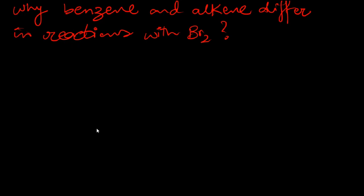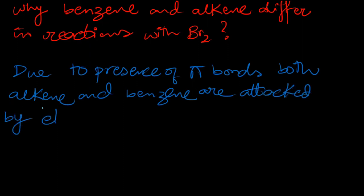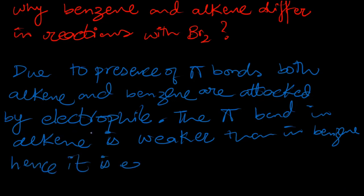I will write the answer now. Due to presence of pi bonds, both alkene and benzene are attacked by electrophiles. The pi bond in alkene is weaker than in benzene, hence it is easily broken.